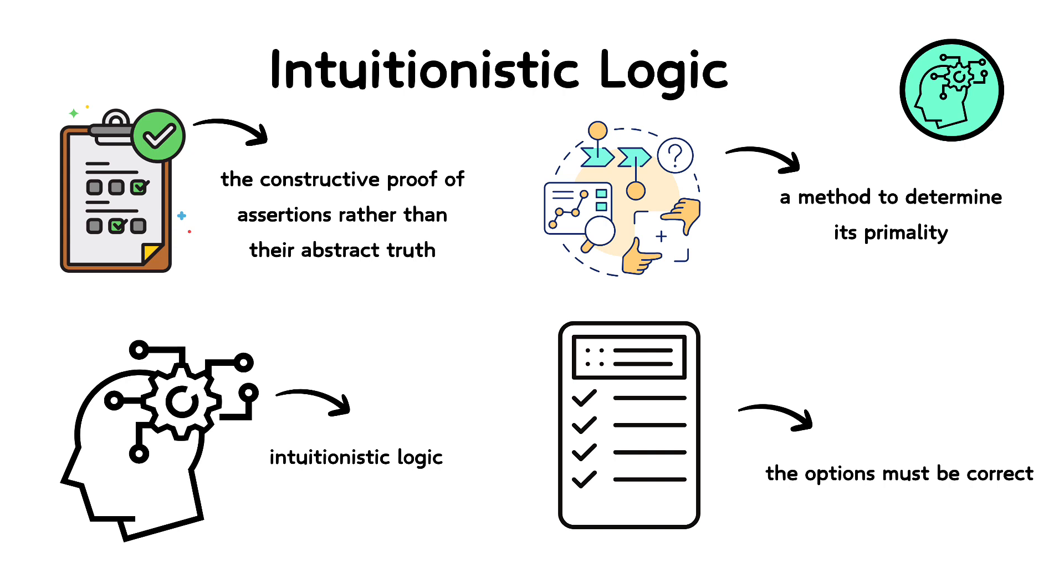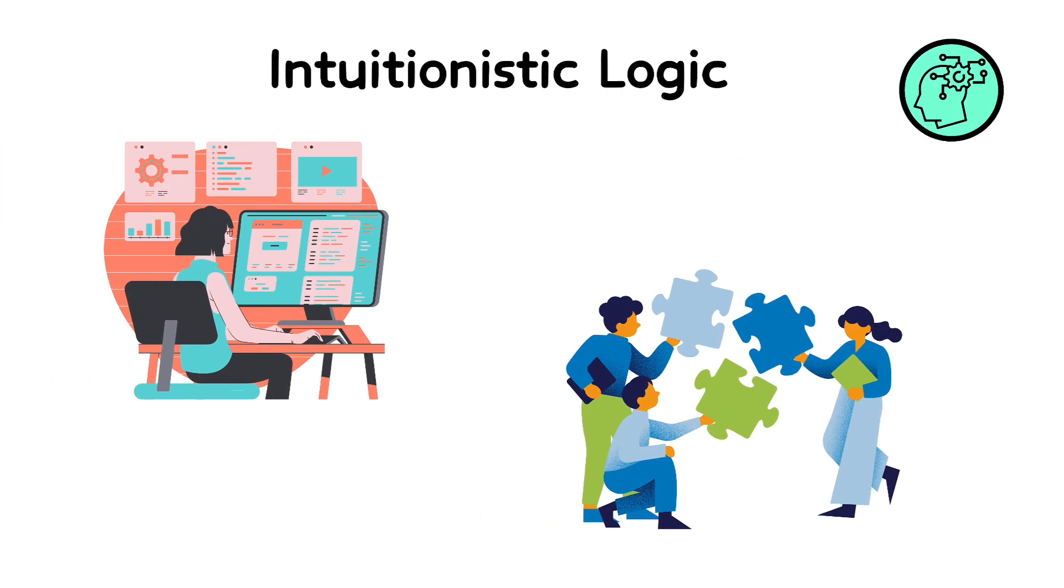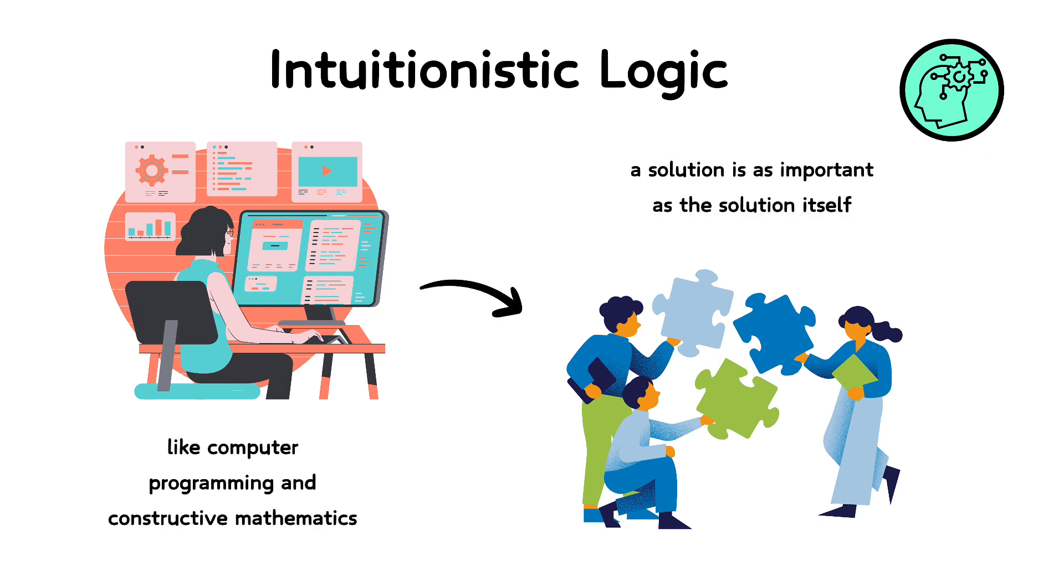For example, in intuitionistic logic, to claim that a number is either prime or not prime, one must provide a method to determine its primality, not just assume one of the options must be correct. This approach is particularly valued in areas like computer programming and constructive mathematics, where the process of finding a solution is as important as the solution itself.